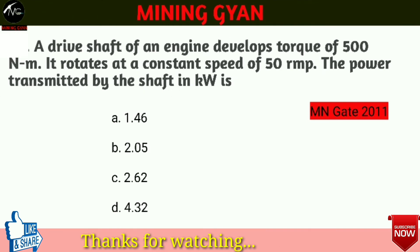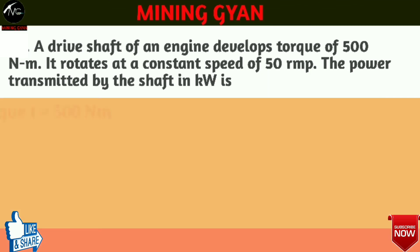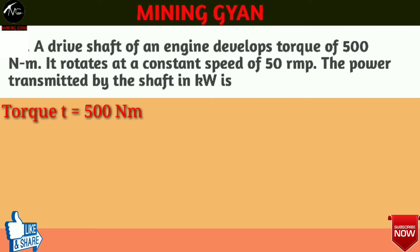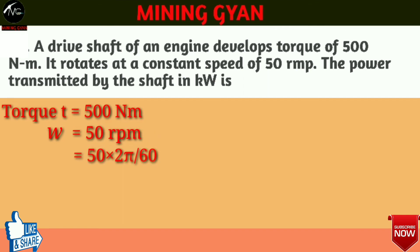आज का last question है: a drive shaft engine develops torque of 500 Newton meter, it rotates at a constant speed of 50 rpm. The power transmitted by the shaft in kilowatt is। Question में torque developed in drive shaft = 500 Newton meter, angular speed = 50 rpm दिया है। RPM को radian per second में convert करने के लिए 2π divided by 60 से 50 को multiply करेंगे — finally angular speed आएगा 5.23 radian per second।